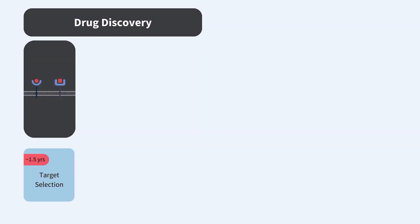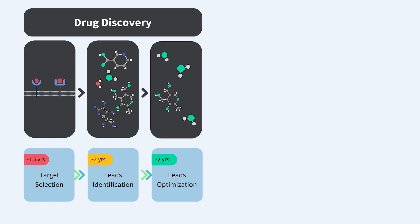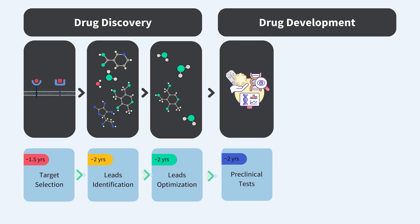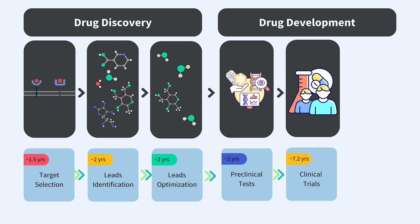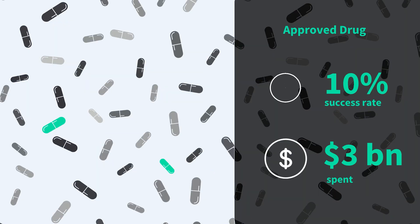Drug discovery is a process through which new drug candidates are identified and tested for treating diseases. The entire drug discovery pipeline is a long and multi-stage process that takes up to a decade and millions of dollars. Unfortunately, the success rate is also very low — almost 90 percent of drugs that pass through pre-clinical stages fail when it comes to human clinical trials. In this episode we are going to explore two in silico methods: pharmacokinetics and pharmacodynamics, also known as PKPD modeling, and quantitative systems pharmacology, or QSP models.